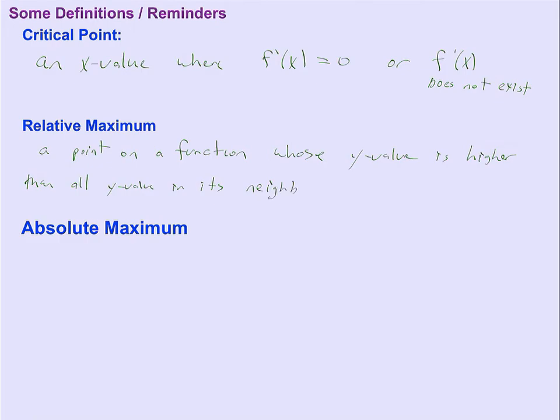Neighborhood is a sometimes technical, sometimes kind of casual way of saying all the numbers really, really close. This point right here is a relative max because all the other y values near it are below that y value.